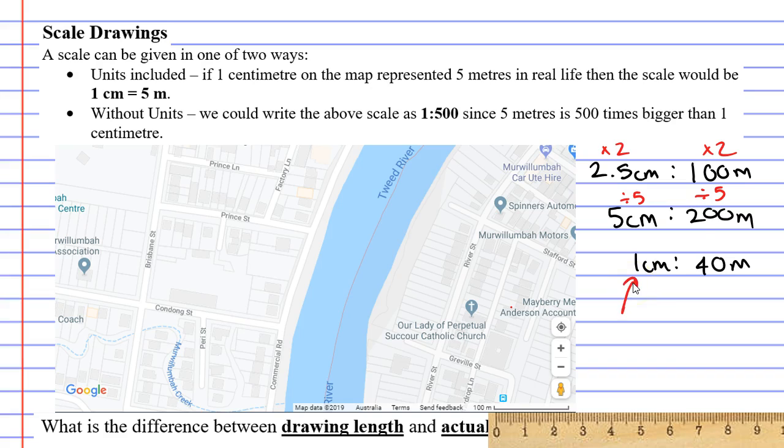The 1 centimeter is what we call the drawing length because we draw 1 centimeter or measure 1 centimeter on the map. The 40 meters represents what is called the actual length because on our map it might have said 1 centimeter but in real life it is actually 40 meters.